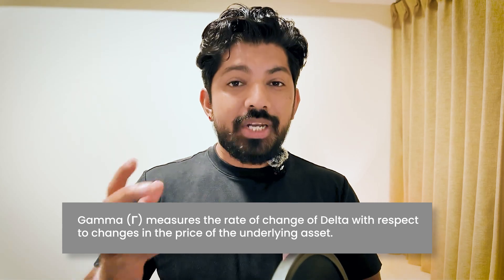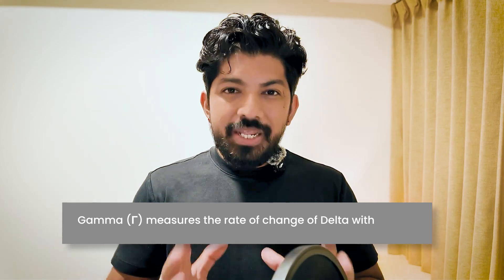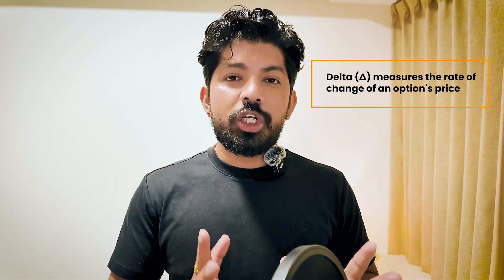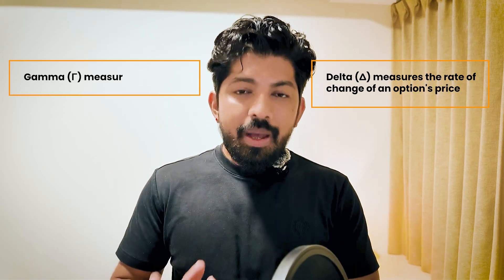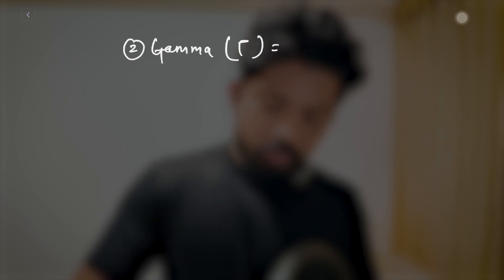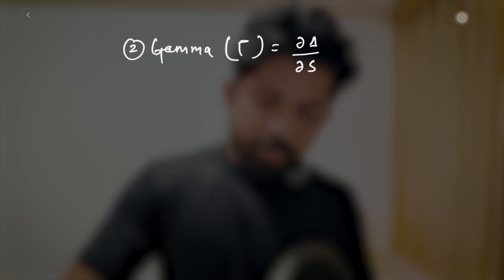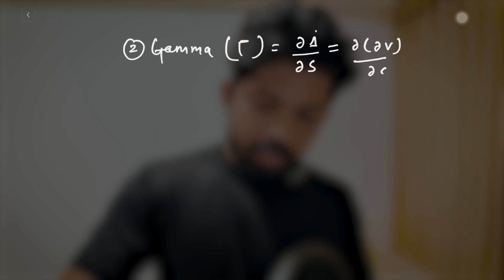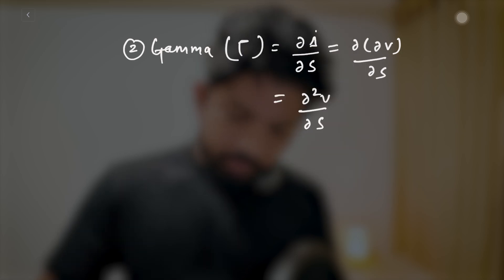The second Greek is gamma. Gamma measures the rate of change of delta with respect to the change in the price of the underlying asset. Pay attention — delta measures the rate of change of the option's price, whereas gamma measures the rate of change of delta itself. The formula is: gamma = d(delta)/dS = d²V/dS².